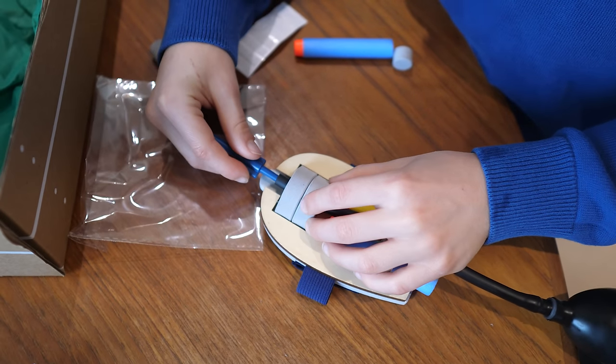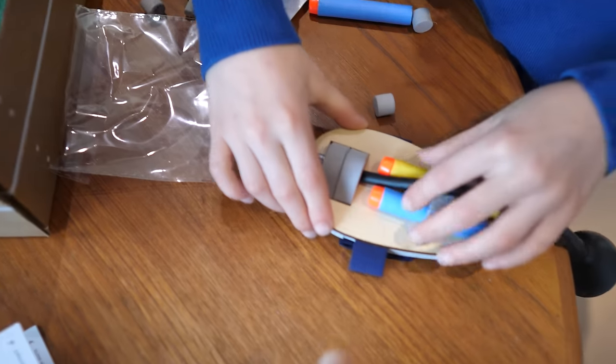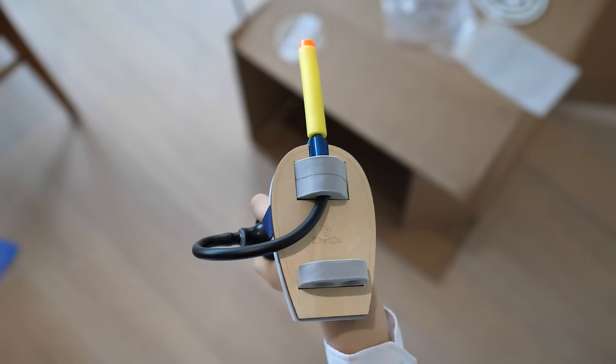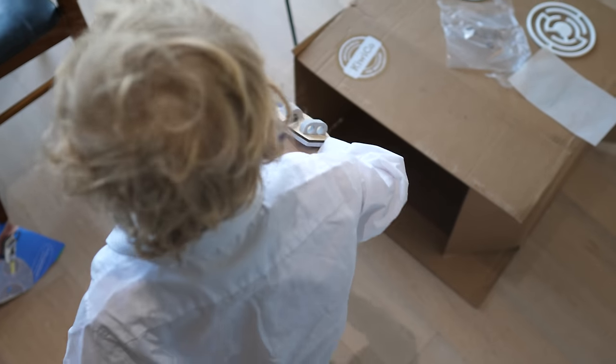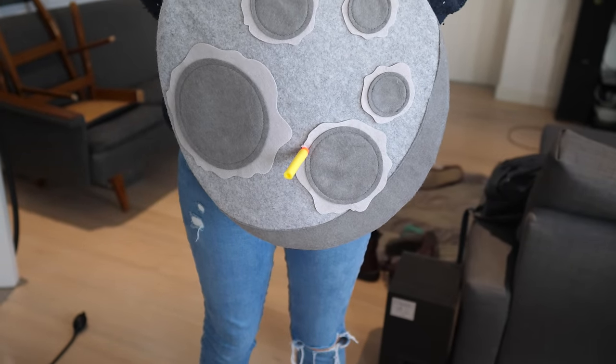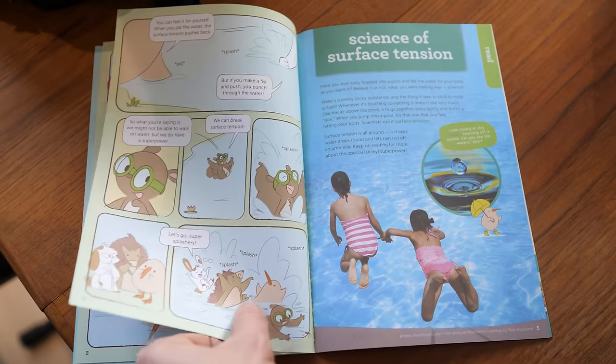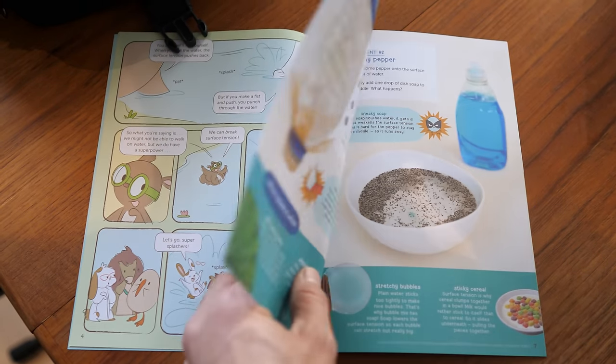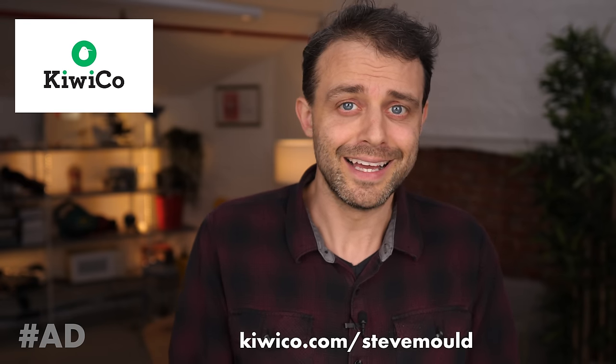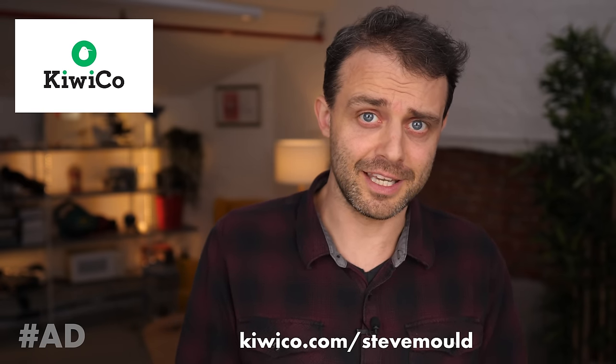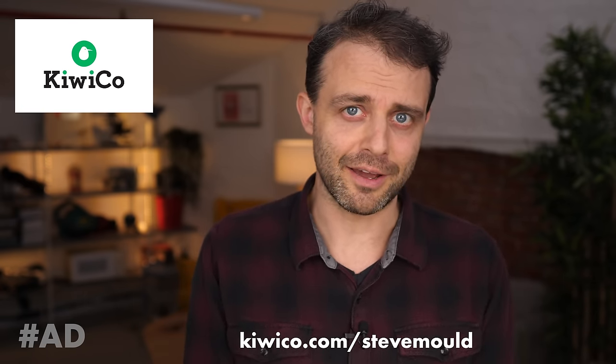I can talk endlessly about the importance of STEM education, but from a purely emotional point of view, watching my kids get excited about building something just puts a massive smile on my face. And it's not just about the build—there's always a STEM angle as well. For example, maybe you're building a paint spinning art machine, but you're also learning about how motors and switches work. Every crate comes with a magazine with additional activities and things to do, so each crate ends up lasting for days and days. You can get the first month of a KiwiCo subscription for free if you use my special URL: kiwico.com/stevemould. The link is also in the description, so check out KiwiCo today.